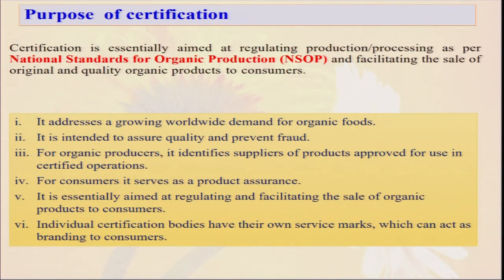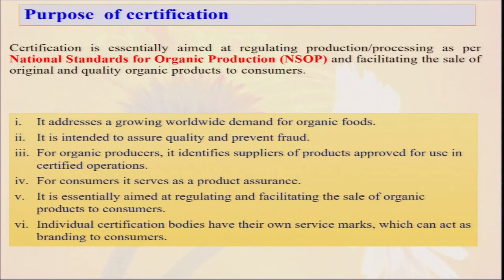Suppose you go to the market and one person says their produce is organic and another seller also says their produce is organic — how do you know? Only by seeing the certification certificate and the logo on the product given by an accredited agency can you judge which is really organic. Individual certification bodies have their own service marks which act as branding to consumers. Sometimes certification is specific to certain foreign countries — USDA for the USA, and different regulations for the European Union — so we must always know these different protocols and rules.